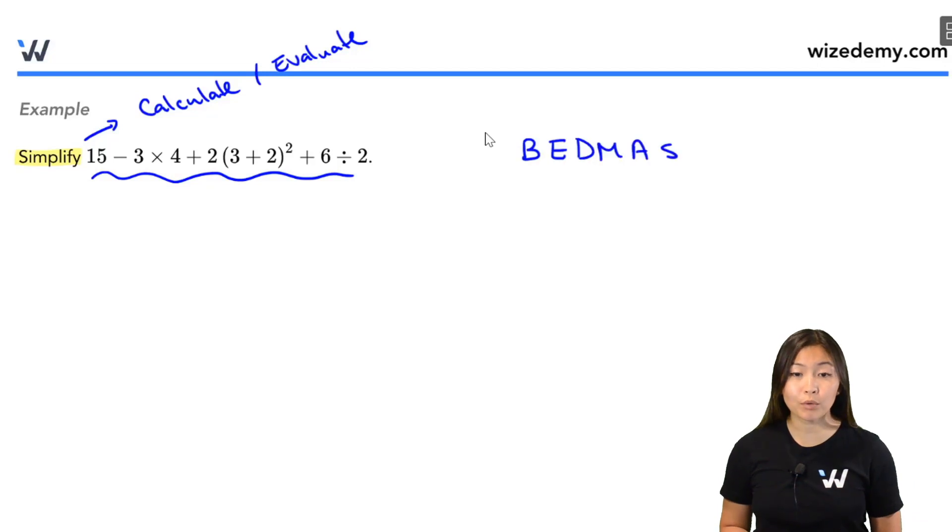Okay, so starting with brackets, that's B. Do we have any brackets in this expression? Yes, we do. It's right here. So we need to simplify whatever is inside the brackets. What about everything else? Well, we're not going to touch anything else. Everything else is going to stay the exact same, so I'm just going to copy it out. Okay, now as promised, let's deal with the brackets. What is 3 plus 2? Write that down. Well, that's just a 5.